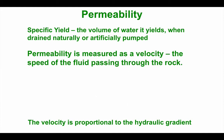Permeability can have several different measurements. We can talk about the specific yield of a rock, which is the volume of water we can get out of it when it's drained or pumped. Crucially — and perhaps what best shows how different permeability is from porosity — permeability is measured as a velocity, a speed: how fast can the fluid pass through that rock? This velocity is proportional to the hydraulic gradient, the steepness of the water table.